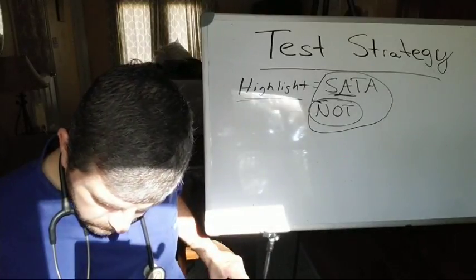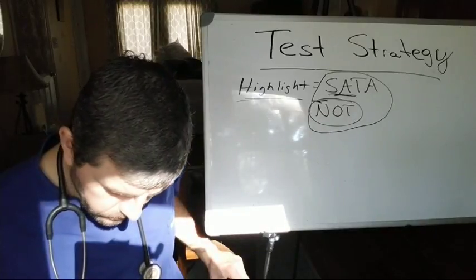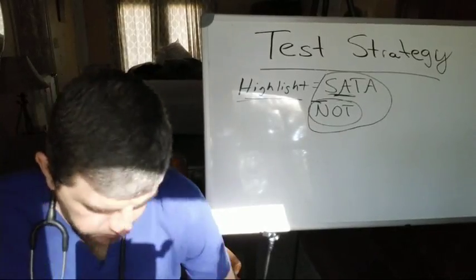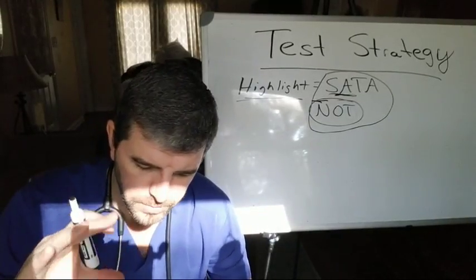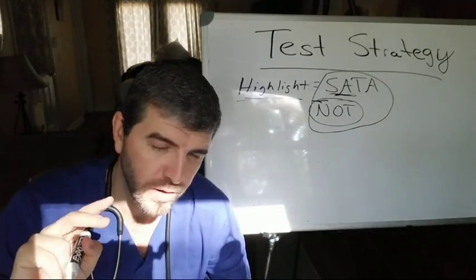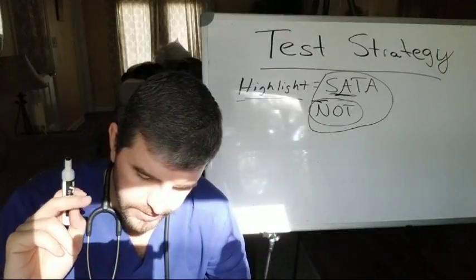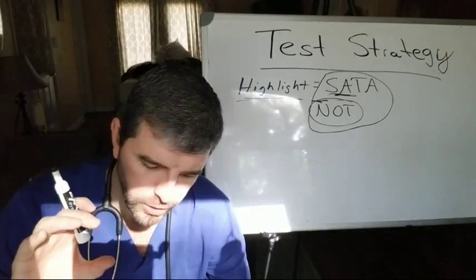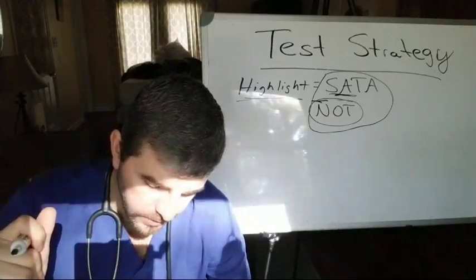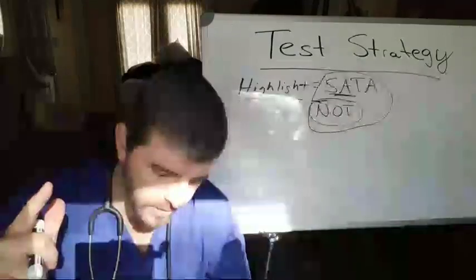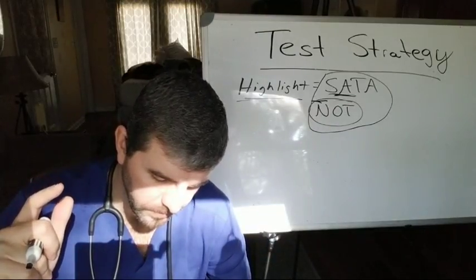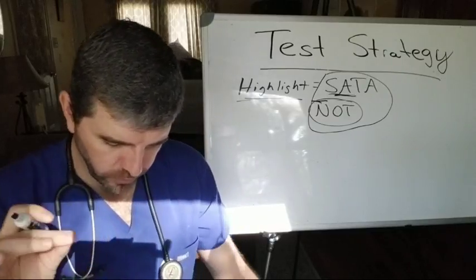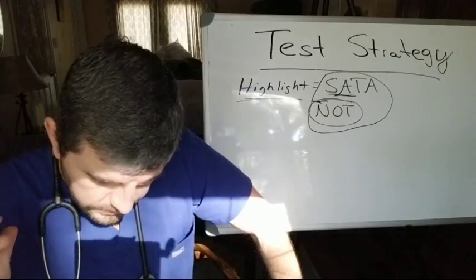Let's go to a harder question. A nurse is in an urgent care clinic obtaining history from a client who has type 2 diabetes and a recent diagnosis of hypertension. This is the second time in two weeks that the client has experienced hypoglycemia. Which of the following data should the nurse report to the provider?